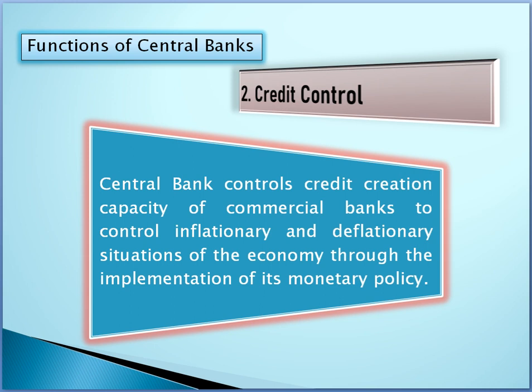Controlling money supply and credit is an important function of the central bank. The central bank controls the money supply and credit in the best interest of the economy, because uncontrolled credit and money supply causes fluctuations in the purchasing power of money. So the money supply and credit should be subject to control. According to the needs of the economy, the central bank increases and decreases the supply of high-powered money, and creates incentives or disincentives for commercial banks to give loans to investors.